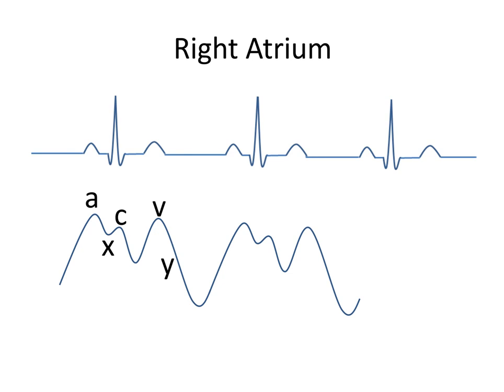The X descent represents atrial relaxation and the sudden downward motion of the atrioventricular junction from ventricular systole. The Y descent represents rapid emptying of the right atrium after the tricuspid valve opens.